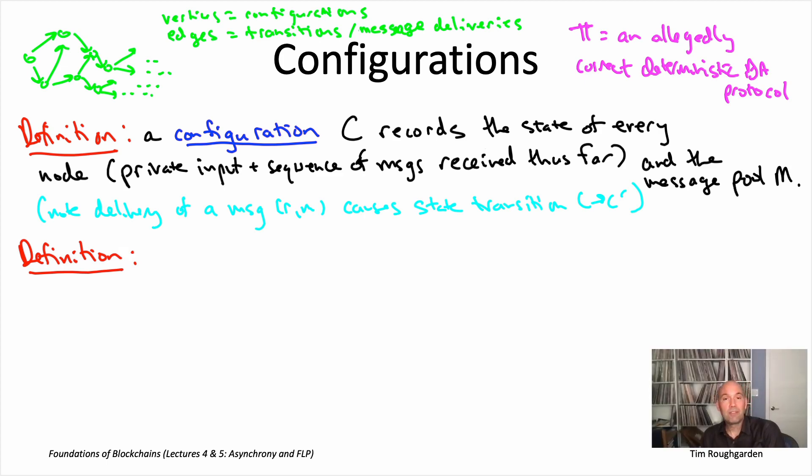Now, the three types of configurations we're going to look at are the ones that inevitably lead to all honest nodes outputting zero, the ones that inevitably lead to all honest nodes outputting one, or the remaining configurations where we don't know, where it's going to depend on what the adversary does, whether all the honest nodes output zero or, alternatively, whether they all output one.